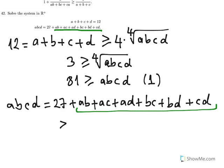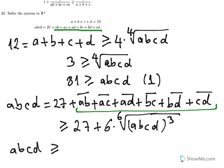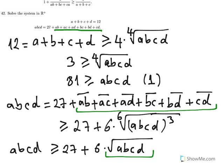So that sum is greater than or equal to 27 plus, since we have six terms, six times the sixth root of their product: AB · AC · AD · BC · BD · CD. That product gives us ABCD cubed. So from here we get that ABCD is greater than or equal to 27 plus six times the square root of ABCD. If we say T equals the square root of ABCD, then ABCD equals T squared. So this is a quadratic inequality.